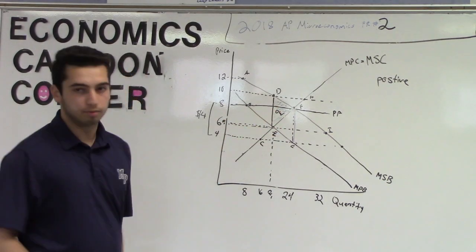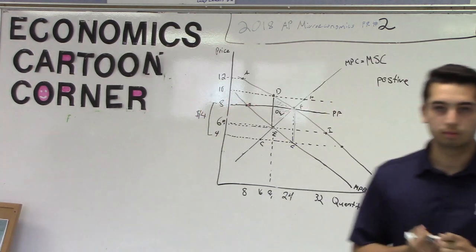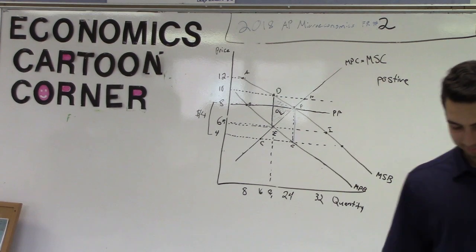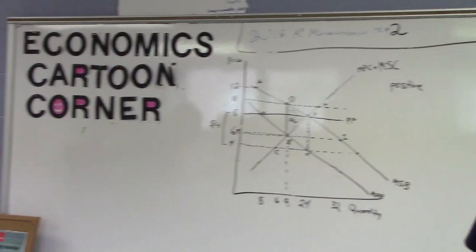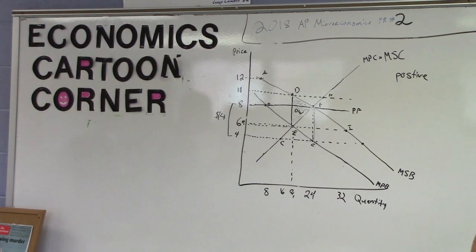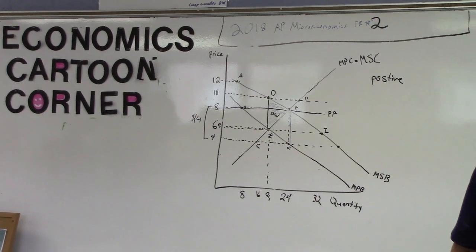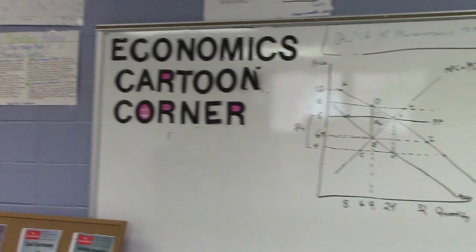I'll tell you what, that was explained as well as I ever heard. Very good explanation of that. Excellent. Part E. Suppose the government does not grant a subsidy, and instead imposes a price floor at $8. How many units will consumers and producers exchange at the price floor? All right.